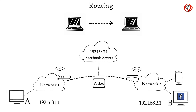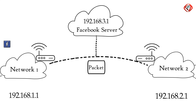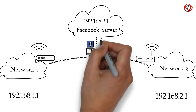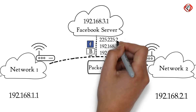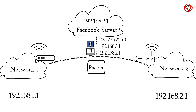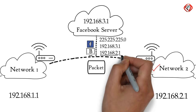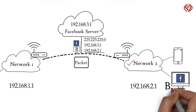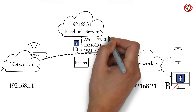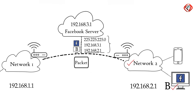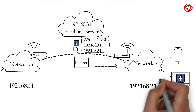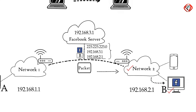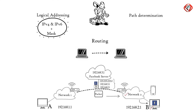The network layer of the Facebook server has already added the sender's and receiver's IP address in the packet. Suppose the mask used is 225.225.225.0. This mask tells us that the first three combinations represent the network, while the last combination represents the host, or computer B. So based on the IP address format, the received data packet will move first to network 2 and then to computer B. Based on the IP address and mask, routing decisions are made in a computer network.